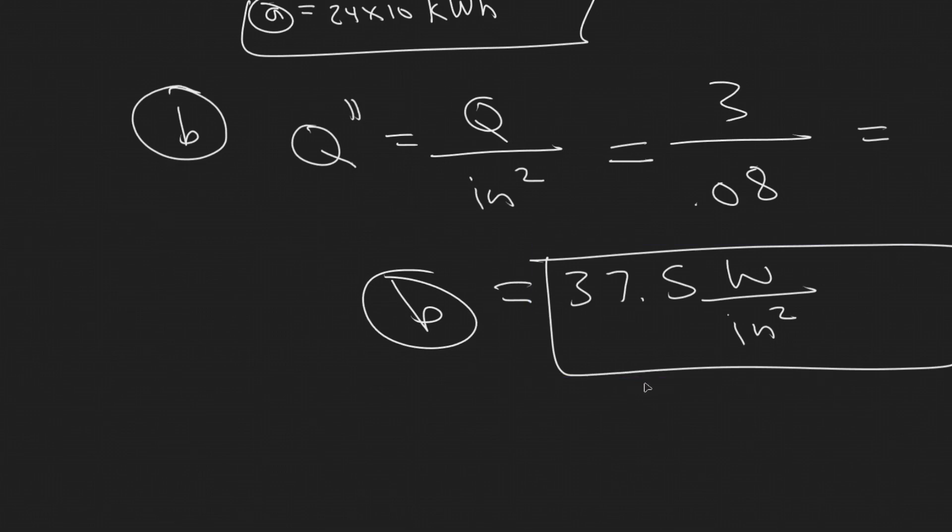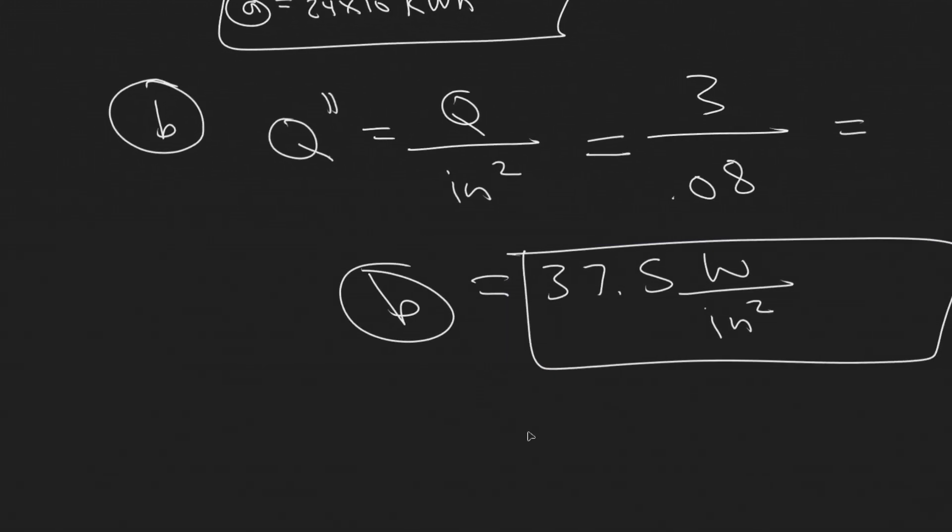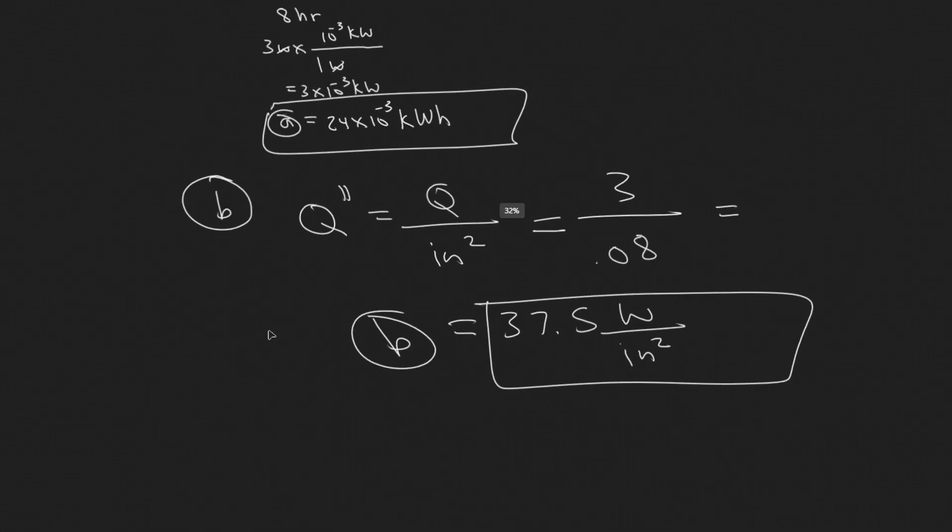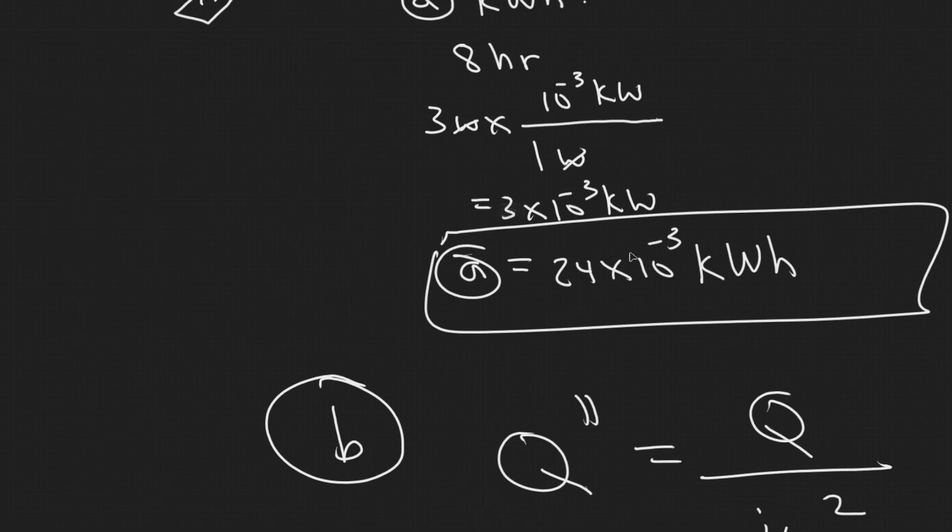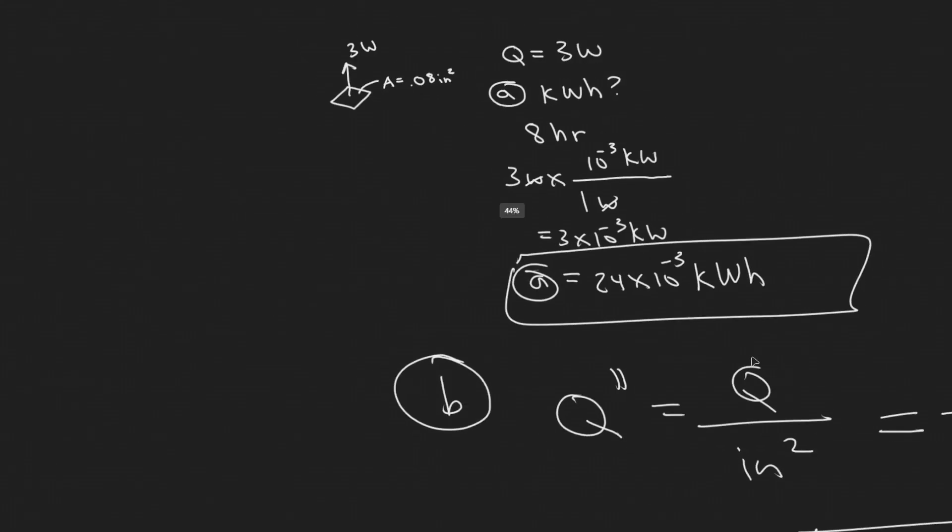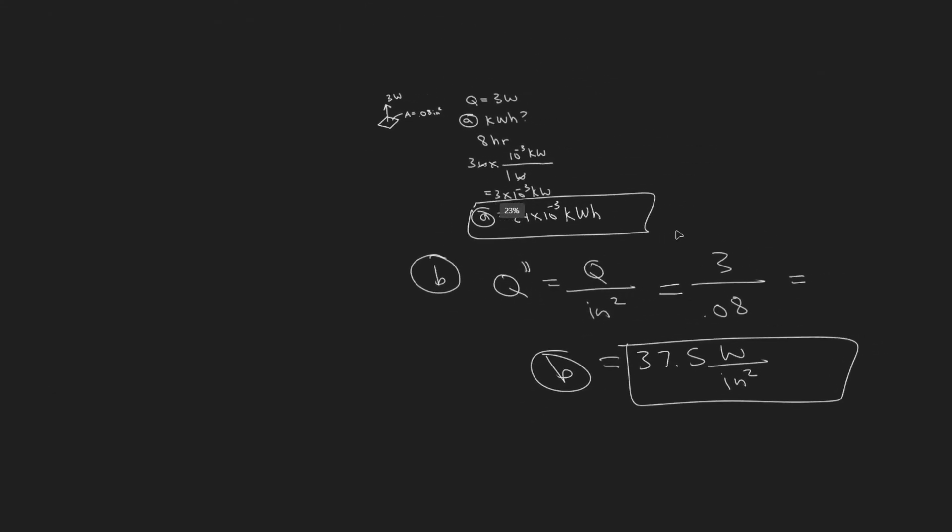So yeah, the main takeaway for this problem is just really understanding the units. So if they give you watts and they want it in watts per inches squared, I know I'm going to be looking at the surface area, right, since they tell me the heat flux on the surface of the chip. So you're just dividing by the surface area. And then in this case, for the first one, you're just going to multiply it by hours to get it in kilowatt hours. But yeah, so these are going to be your answers for this problem.